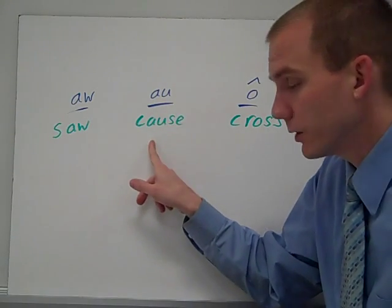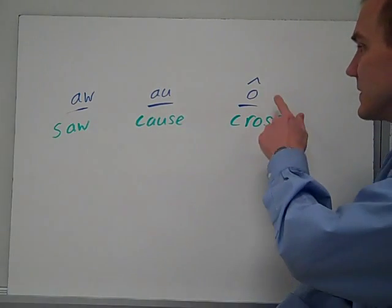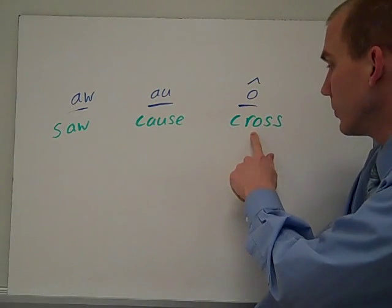It can be spelled au, like in the word cause. And it can just be spelled with an o, like in the word cross.